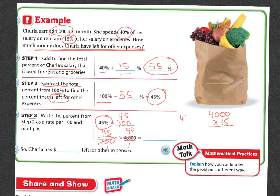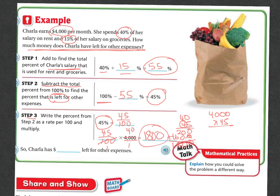So now we have 40 times 45. 5 times 0 is 0, 5 times 4 is 20, carry the 2. Then 4 times 0 is 0, 4 times 4 is 16. Adding up: 0, 0, 8 plus nothing, 1 — so we get 1,800. Charla is going to have $1,800 left over for other expenses.